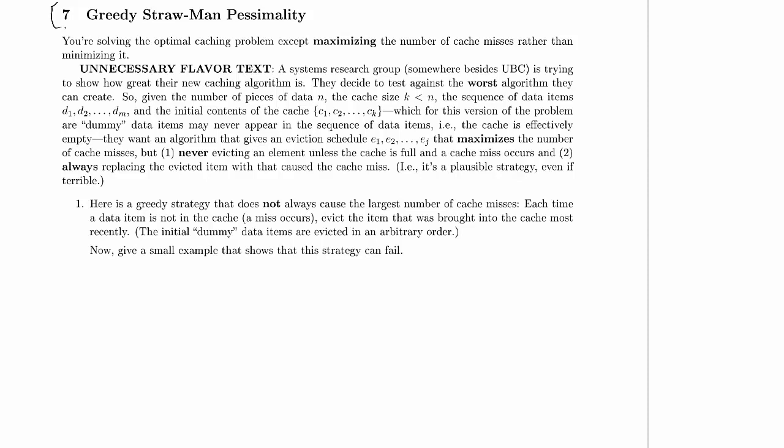But we've got some unnecessary flavor text to make this more fun and exciting. There's some systems research group somewhere besides UBC, and they're trying to show how great their new caching algorithm is. And they decide to test against the worst algorithm they can create.